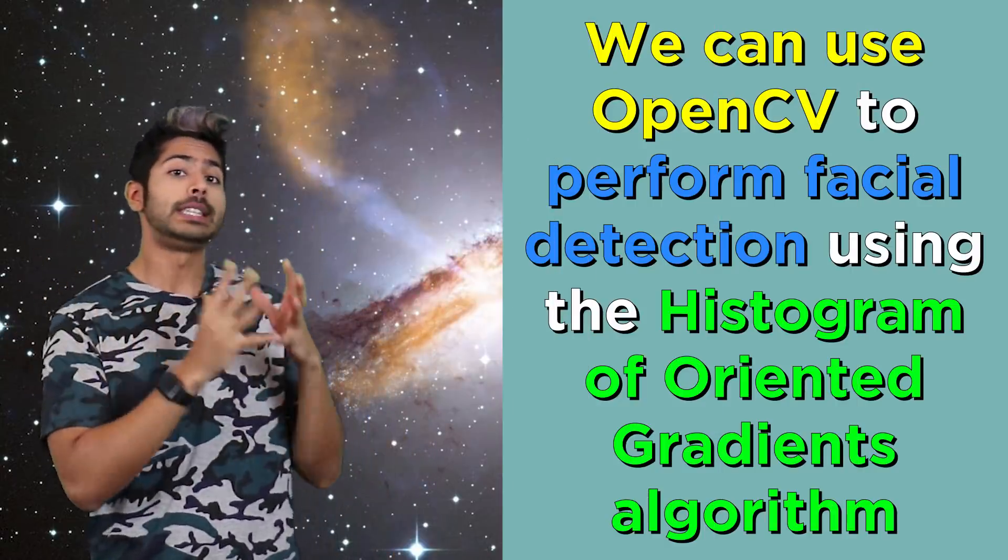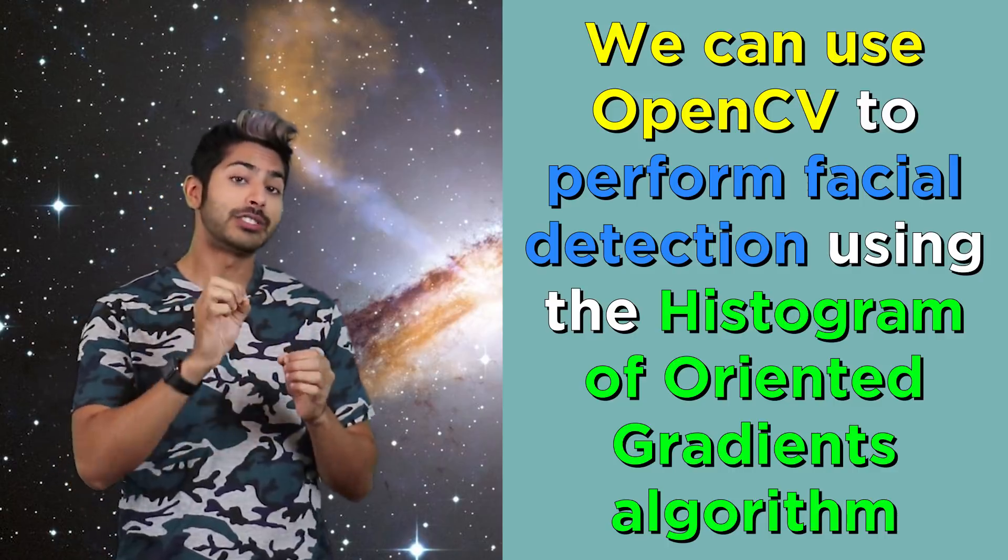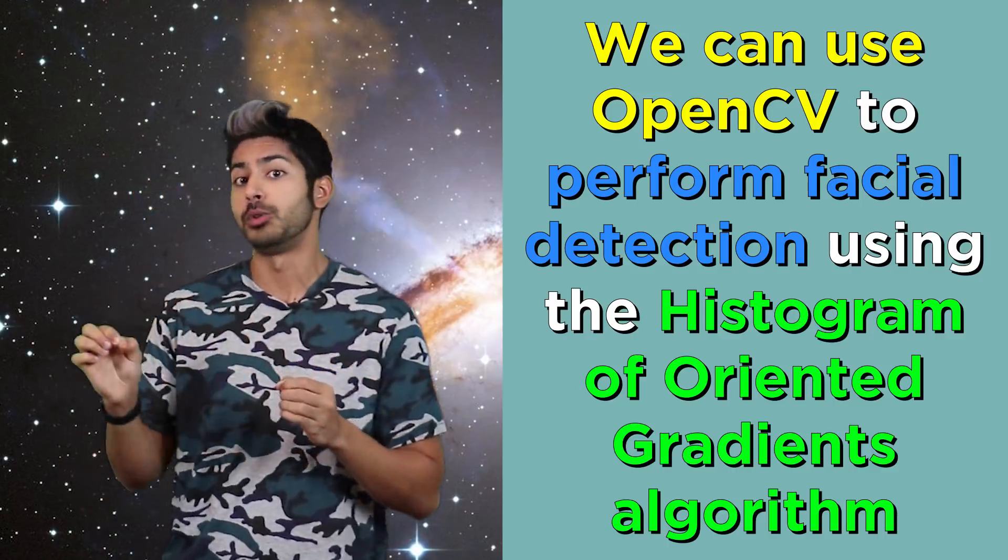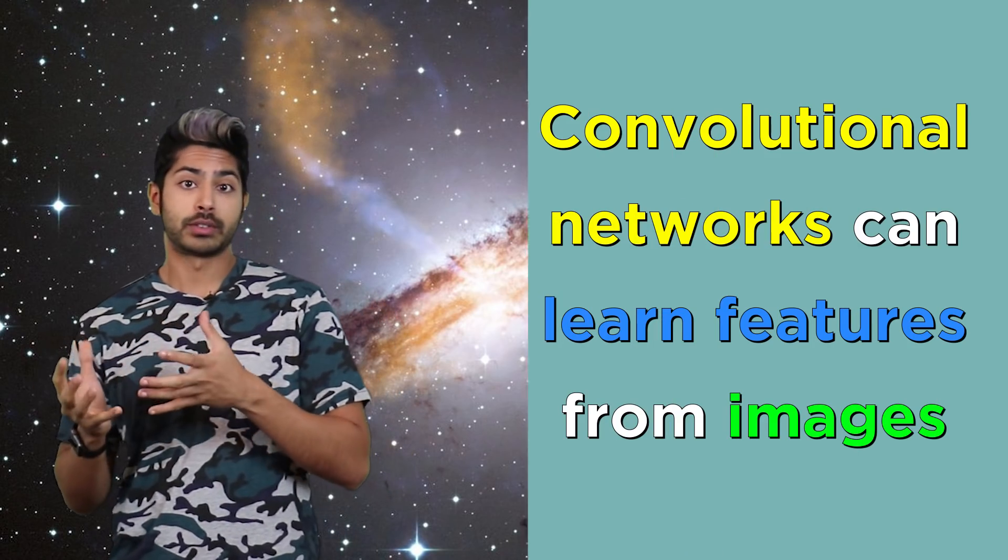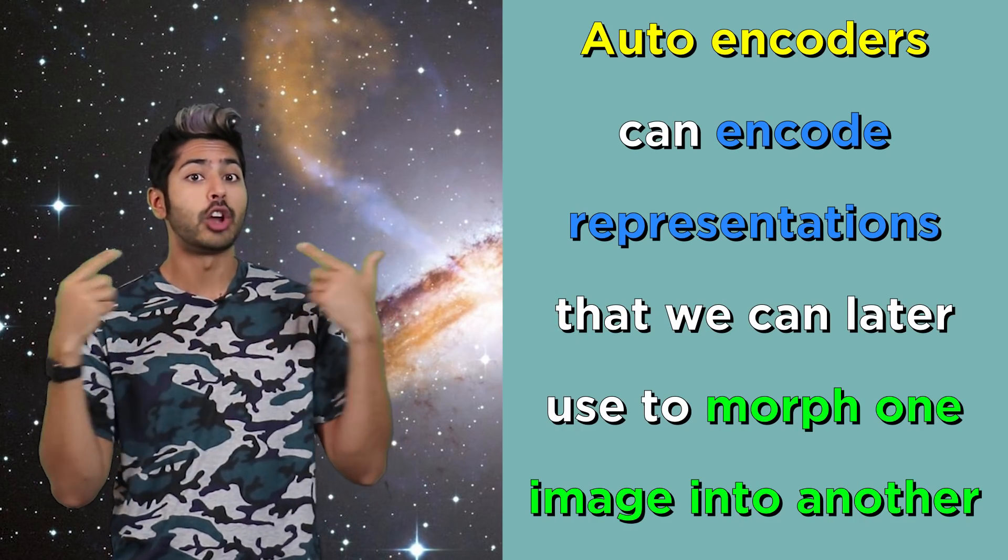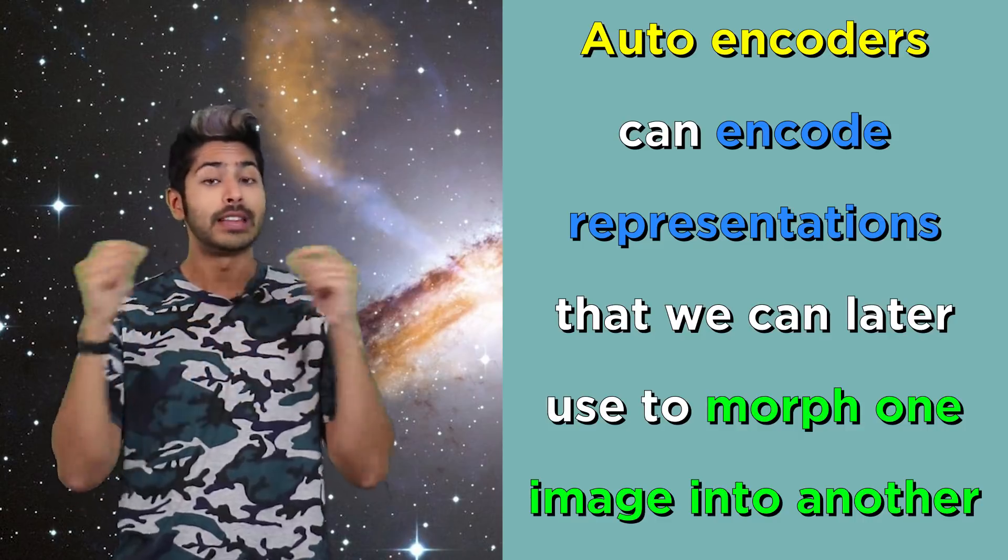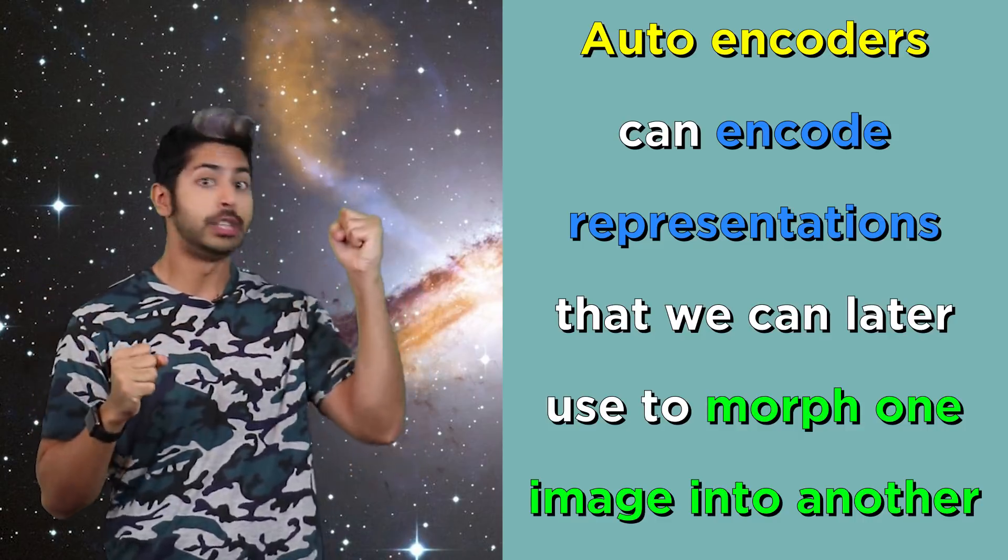Three things to remember from this video: We can use OpenCV to perform facial detection using the histogram of oriented gradients approach. Convolutional networks can learn features from images and autoencoders can encode representations that we can later use to morph one image into another.